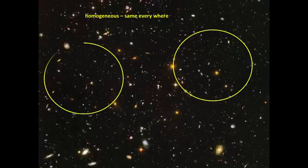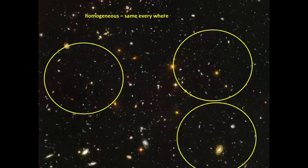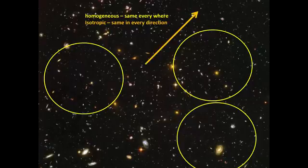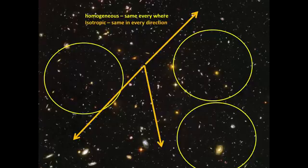The other property is that it's isotropic, which means in whatever direction you look, it will be pretty much the same all on a large scale, of course. If you look in that direction or that direction or that direction, you're seeing basically the same thing.